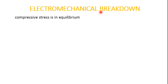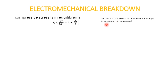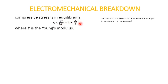Next we have electromechanical breakdown. When insulators are subjected to high electric fields, failures can occur because electrostatic compressive forces exceed the mechanical compressive strength. If the initial thickness of the specimen is d₀ and the compressed thickness is d under applied voltage V, when the electrically developed compressive stress reaches equilibrium, the equation becomes: ε₀ε · V²/(2d²) = Y · ln(d₀/d), where Y is Young's modulus. Rearranging: V² = d² · (2Y/ε₀ε) · ln(d₀/d).